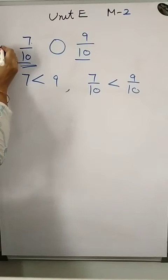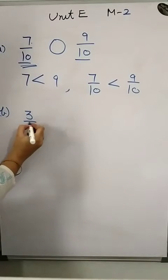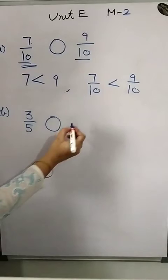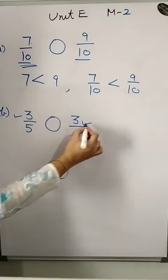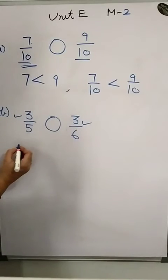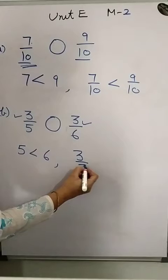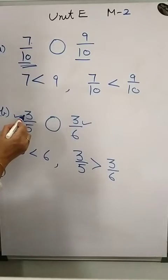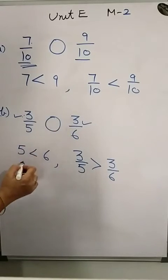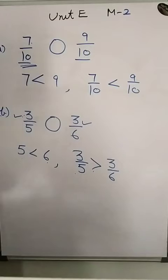Taking another example: 3 upon 5 and 3 upon 6. Here the numerators are equal, so we check the denominators. Since 5 is smaller than 6, we say 3 upon 5 is greater than 3 upon 6. When numerators are equal, the fraction with the smaller denominator is greater, so you put the greater than symbol.